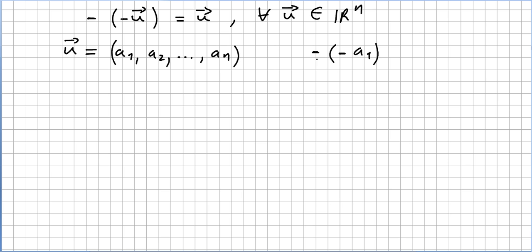So what is -(-u)? This will be minus, at the end of the day, this will be (-(-a_1), -(-a_2), ..., -(-a_n)). And that will be (a_1, a_2, ..., a_n). So u is equal to -(-u).